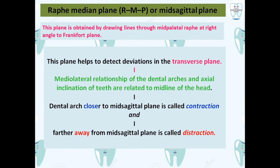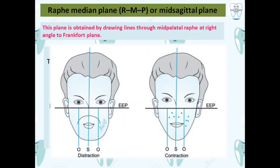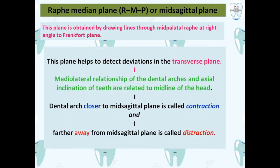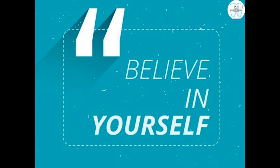To recap the mid-sagittal plane: if the arch is farther away it is distraction, and if it is closer it is contraction. That is Simon's Classification. Thank you, keep visiting.